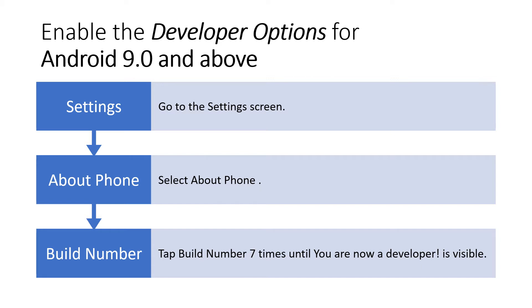First, go to the Settings screen. Then select About Phone. Then look for Build Number and tap it 7 times. A message will pop up telling that you are now a developer.